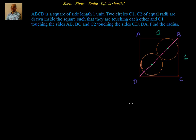Hello friends, welcome back. Let's look at this interesting example. We have been given that ABCD is a square of side length 1 unit. Two circles C1 and C2 of equal radii are drawn inside the square such that they are touching each other, with C1 touching the sides AB and BC, and C2 touching the sides CD and DA.